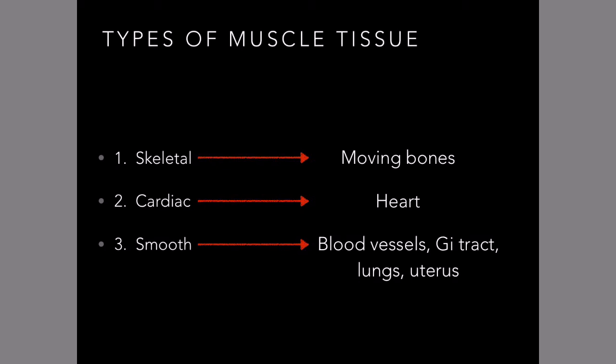Smooth muscle is also found within our lungs. The bronchioles that go from the upper airways down into the lower airways can change their size — they can constrict and dilate — and that is the result of smooth muscle. We also have smooth muscle in our uterus, which is important during delivery because you need that muscle contraction to help push the baby out. And we have smooth muscle in more minor areas such as the eye, where contraction and relaxation of smooth muscle allows our pupil to constrict and dilate.